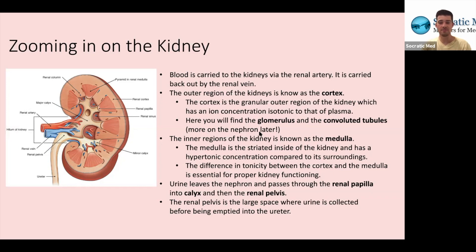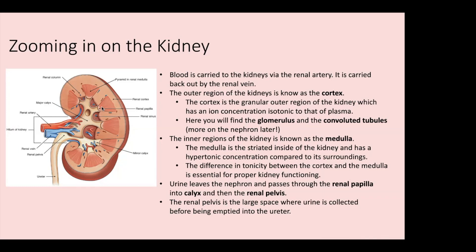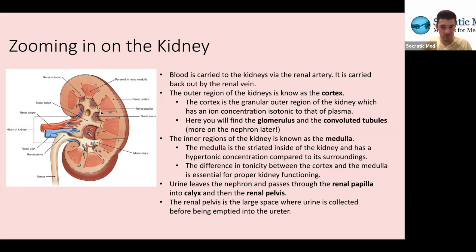Urine leaves the nephron after passing through everything, then passes through the renal papilla into the calyx. If you look at one of these triangles of the medulla, the renal papilla is the connection right between the medulla and the calyx. The calyx is an opening that empties into the renal pelvis. There are multiple medullae throughout, constantly filtering blood and making filtrate. Each medulla pours separately into the renal pelvis, which then makes its way out of the kidney and into the ureter.